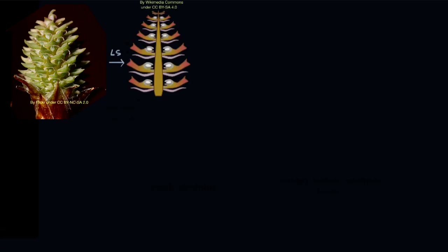We are going to take a longitudinal section of it — we are going to cut it from top to bottom and remove the front part. This is what we will see when we do that. This is the LS, the longitudinal section. The cone has a technical name: it's called the female strobilus, or the female cone.